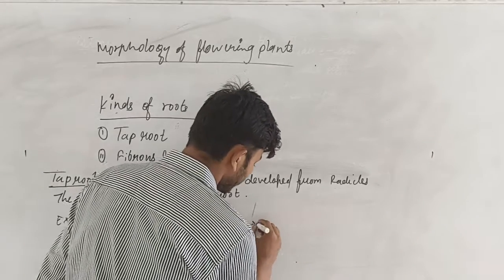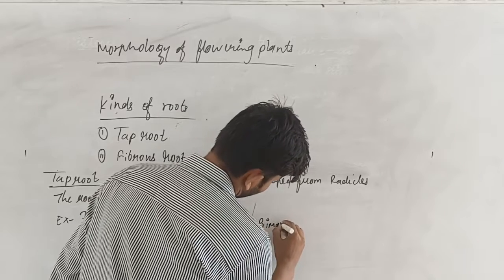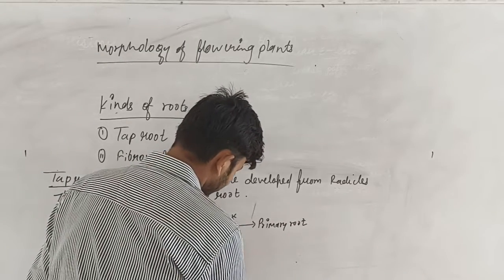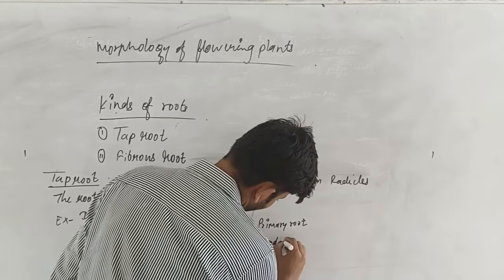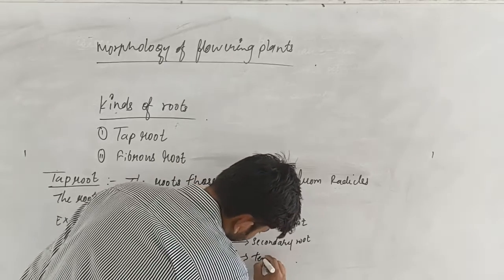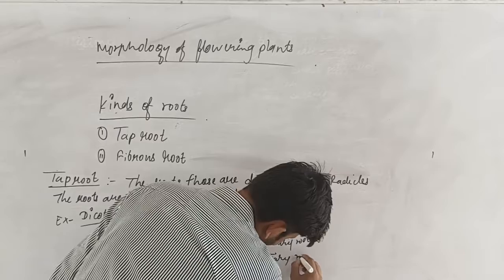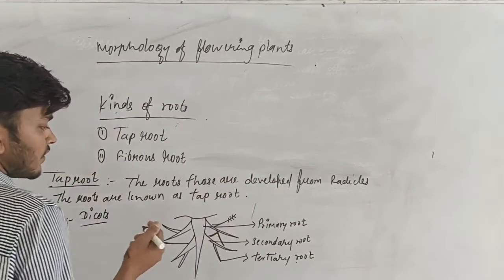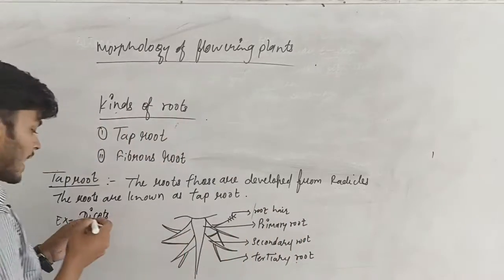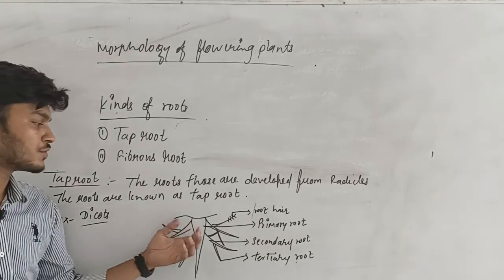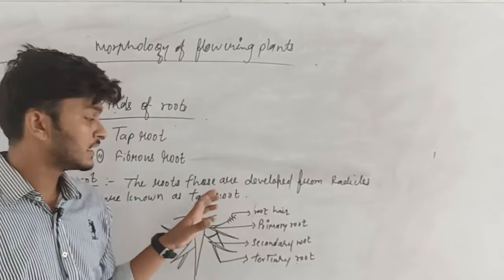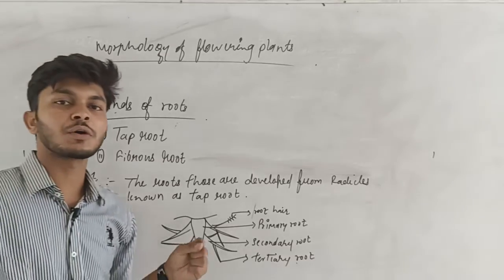If you talk about this one, that is primary. This is secondary. And that is the third root. Look at the tap roots — we can easily identify the tap roots. We can easily talk about mustard.